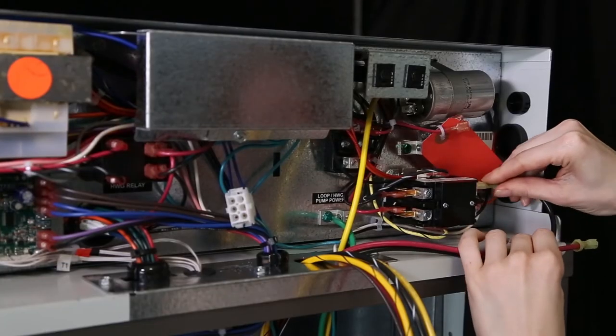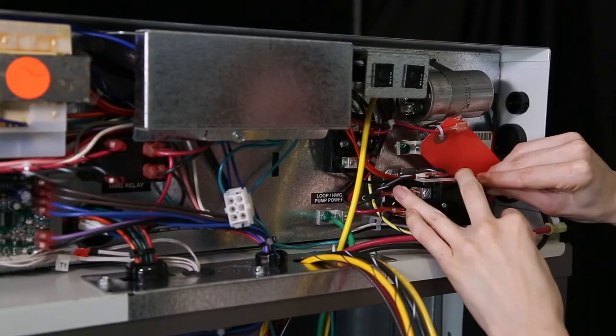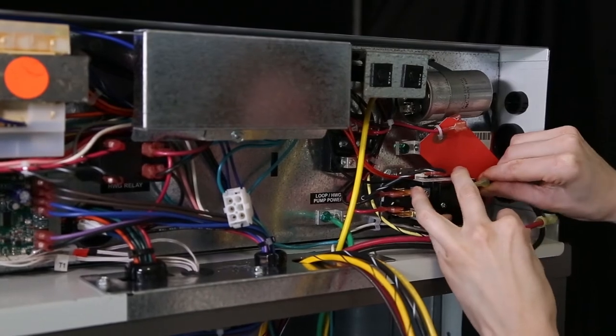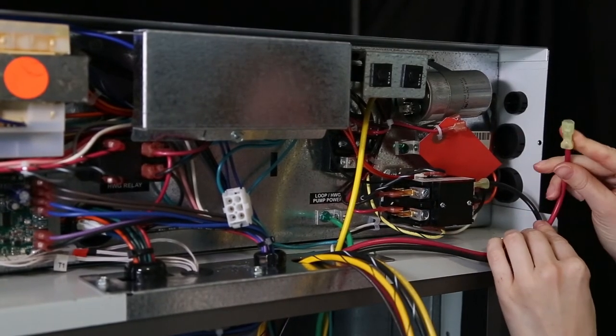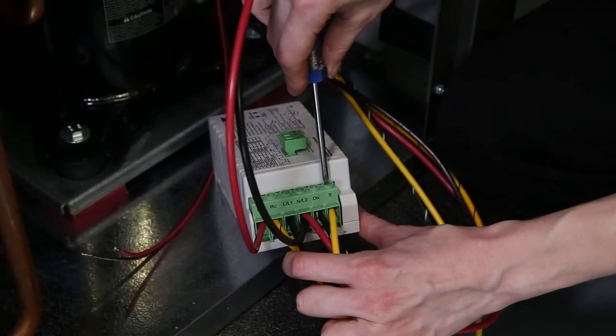It is important to note the red and black 10 gauge wires connect to the line side of the contactor. For this reason, the module is always hot. This is important.